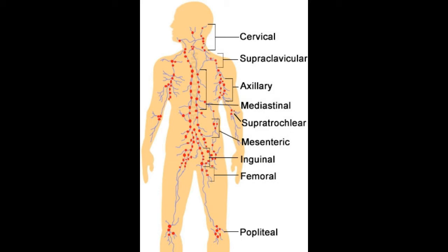Cervical lymph nodes: These lymph nodes are located in the head and neck region, basically found deep in the neck, behind the ears and at the bottom of the jaw. In total, they are 6 in number. They draw lymph from the scalp, face, nasal cavity and pharynx.